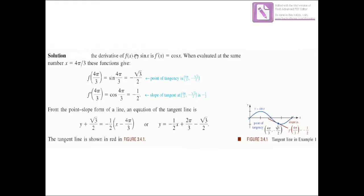The point of tangency is (4π/3, −√3/2) and the slope is −1/2. Here we have the graph of f(x) = sin(x), and at the point (4π/3, −√3/2) we can see the tangent line to the function.